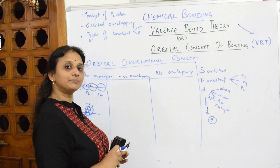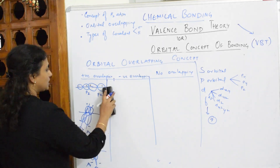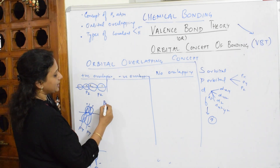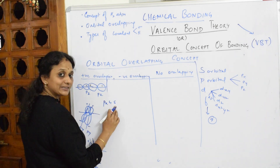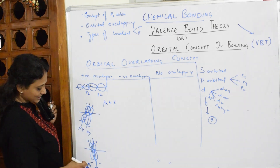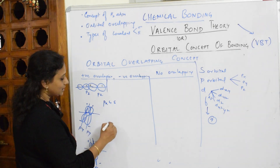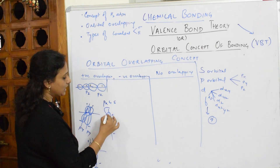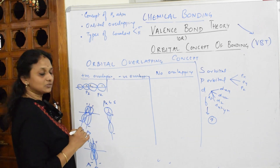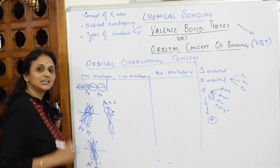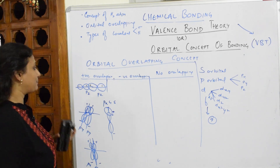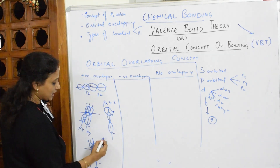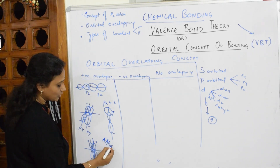Let me pick up one more example with Px and S-orbital. S-orbital is spherical and Px is dumbbell-shaped. I have drawn the Px orbital with minus on one side and plus on the other, overlapping with an S-orbital which is also positive. So plus and plus are overlapping — that is your positive overlapping test.